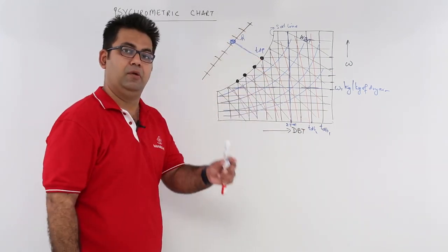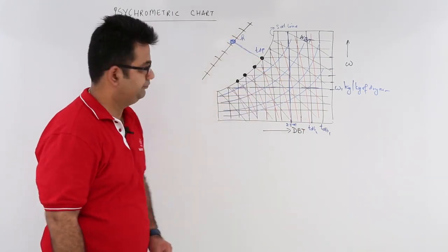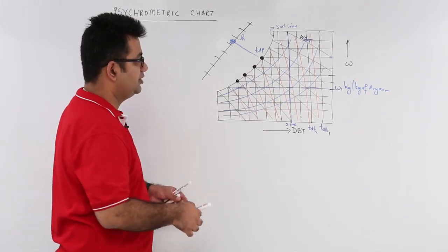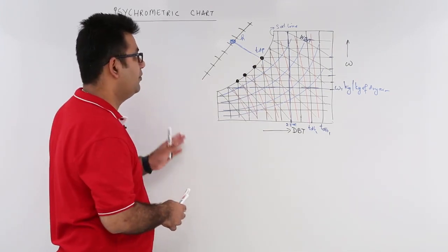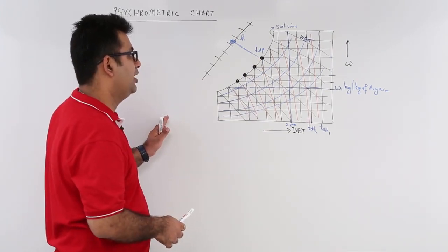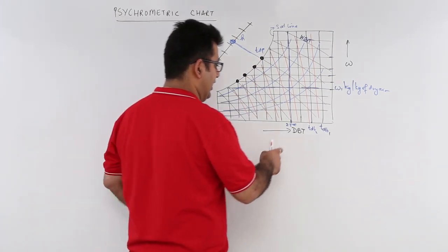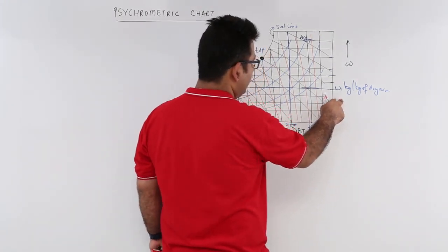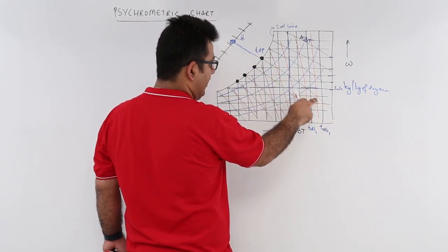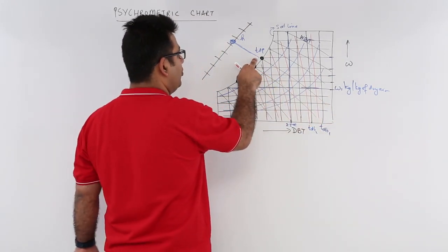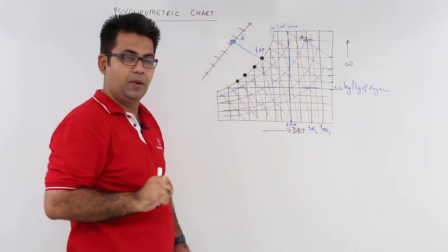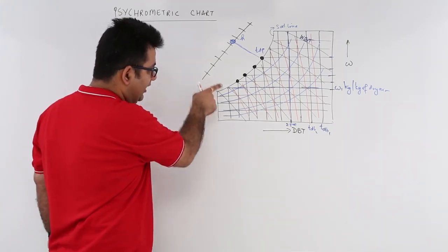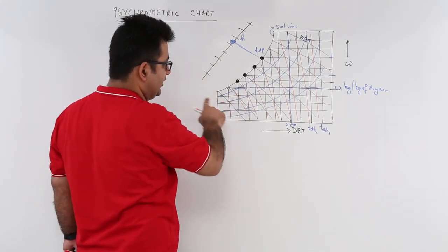When you extend the wet bulb temperature line and cut this outer axis, that point shows the enthalpy value at that particular condition. So the psychrometric chart tells you the dry bulb temperature, the specific humidity, the wet bulb temperature, the dew point, and the enthalpy.